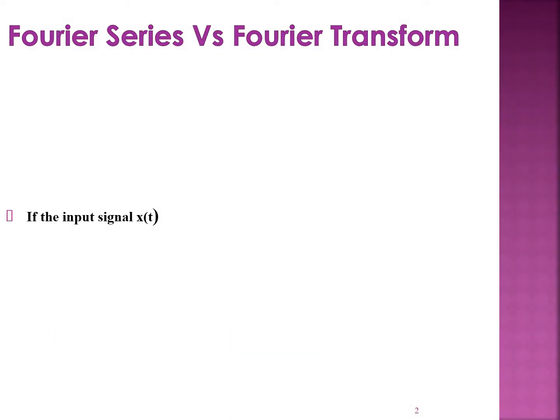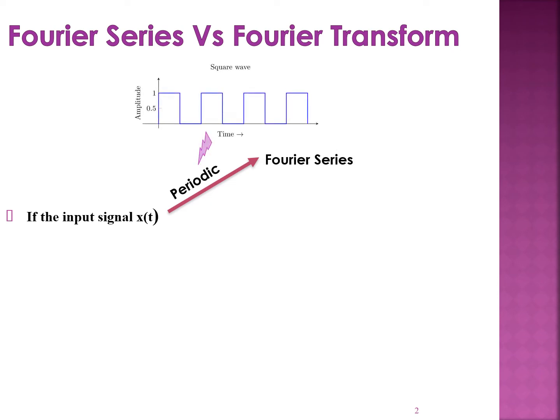Fourier series versus Fourier transform. Now, Fourier series and Fourier transform both are used for frequency domain representation of a signal. Let us see when do we use Fourier transform and when do we use Fourier series. Given a signal x of t, if it is periodic, then we go in for Fourier series. A signal that repeats itself after a finite duration of time is called a periodic signal, and for that we use Fourier series.